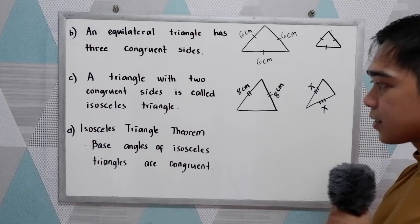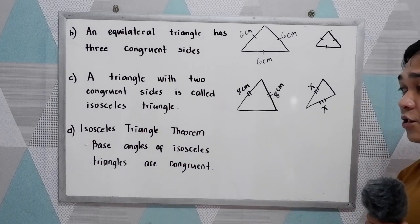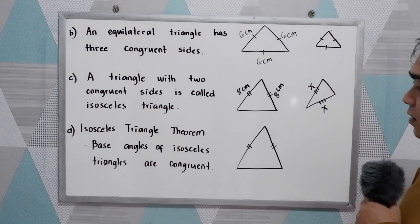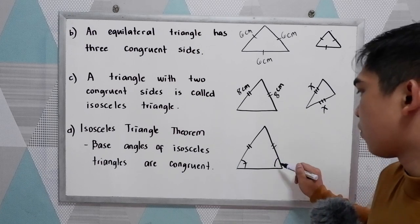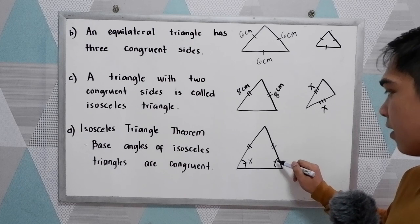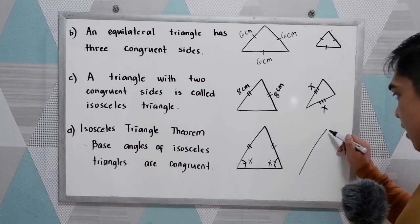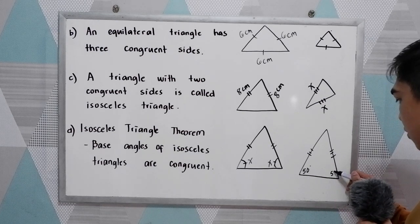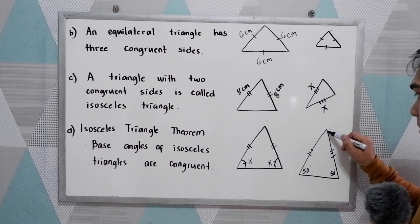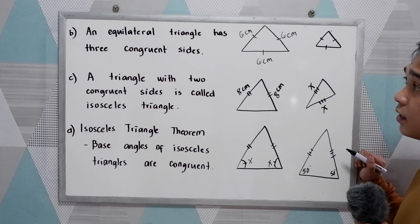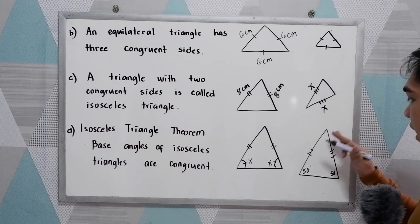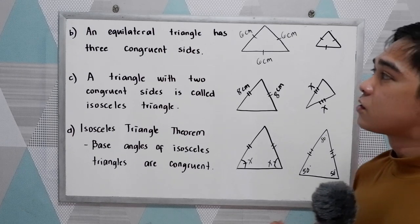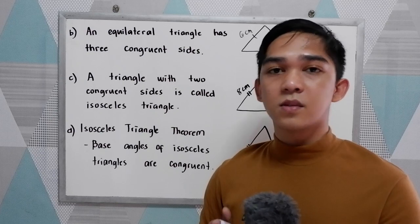Letter D, the isosceles triangle theorem: the base angles of an isosceles triangle are congruent. So, if the two sides are equal, the base angles are also equal — if this is x, the other base angle also measures x. If this is 50 degrees, therefore this is also 50 degrees. Now, if the vertex angle is missing, using our first definition, the sum of the measures of the angles is 180. So, just connect all the theorems and definitions about the triangle.